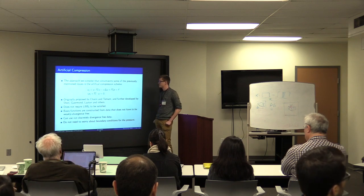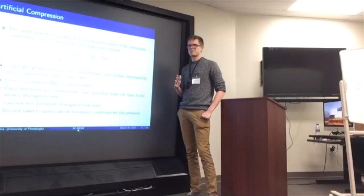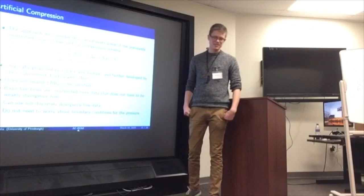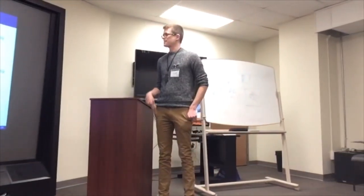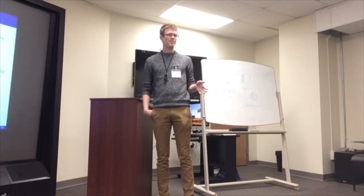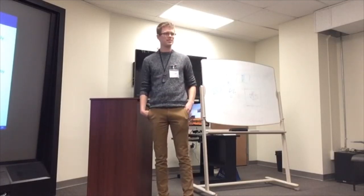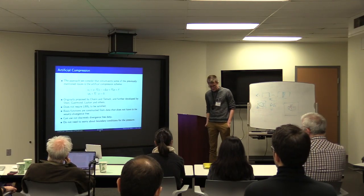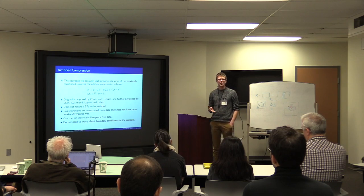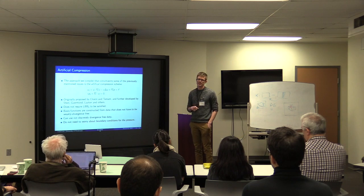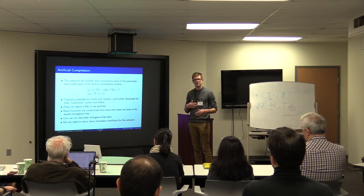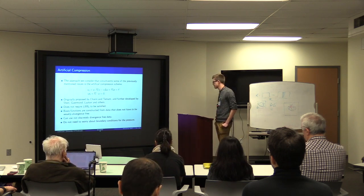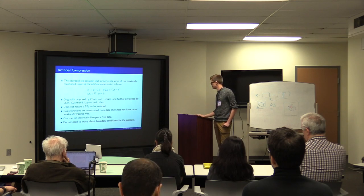So artificial compression methods is the approach of adding this epsilon pt term to perturb the continuity equation. And this goes back to the 60s and 70s, originally by Chorin and Temam, and then this has been analyzed a lot and extended by others later. But this is a regularization to the equations that gets rid of the saddle point problem. So I don't care about inf-sup stability as much anymore.